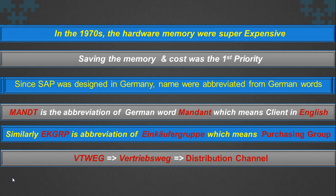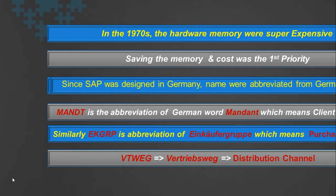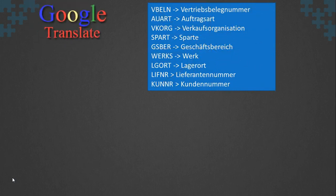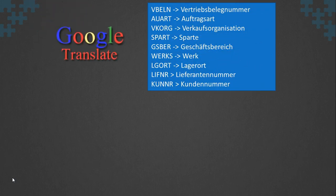The not-so-friendly field names actually make absolute sense in German. MANDT is the short form for Mandant, which means client in German. Similarly, EKGRP, VTWAG, etc. have some real meaning. So next time you want to know the actual meaning of a German word, just use Google Translate.